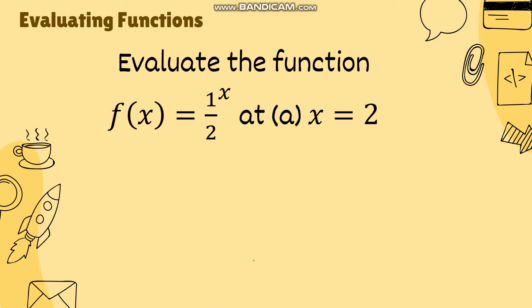Next, let's evaluate the function f(x) = (1/2)^x at the value of x which is equal to 2. So instead of f(x), we now write f(2), meaning we are substituting 2 for the variable of the function. So we have 1/2, and since this is raised to x, that means this will become (1/2) squared, or raised to 2.